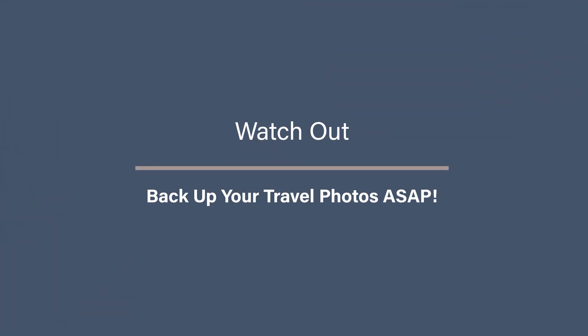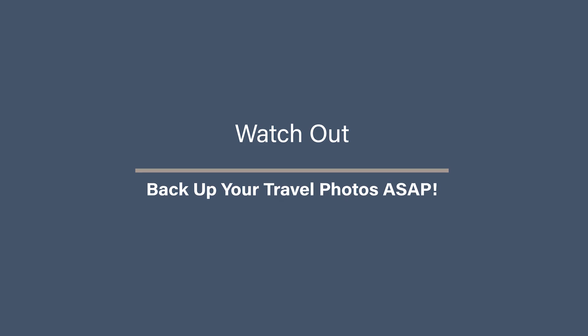Watch out: back up your travel photos as soon as possible. Never wait too long to back them up — so many people lose their best travel shots because their phone gets lost, their memory card gets corrupted, or they accidentally delete them. As soon as you get home, back up your trip photos to at least two places: your computer, an external hard drive, or cloud storage like Google Drive, OneDrive, or Dropbox. Follow the 3-2-1 backup approach — three copies of your photos across two locations with one being off-site — and this will make sure your travel memories stay safe forever.